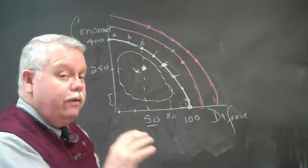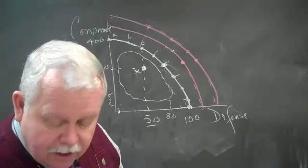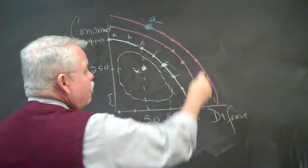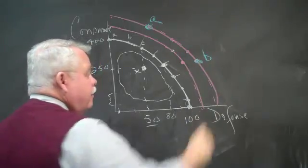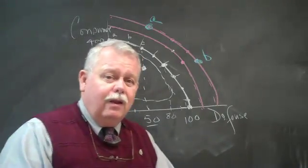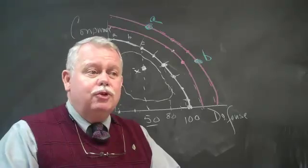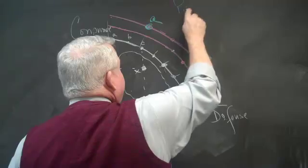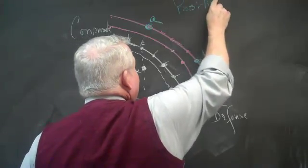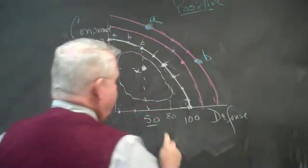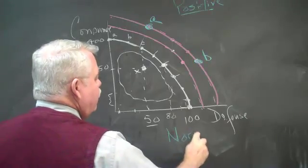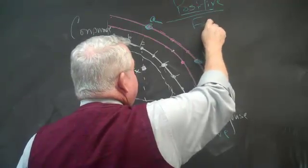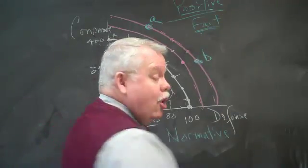Now, the real question now is, where should we be? Are we better off up here at point A or are we better off down here at point B? And that becomes more opinion. And so let's illustrate the difference between positive economics and normative economics. Positive economics are basically statements of fact. No opinion.